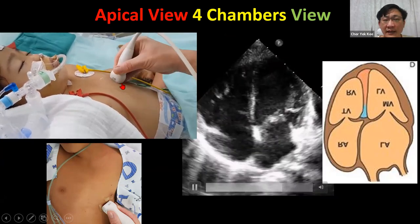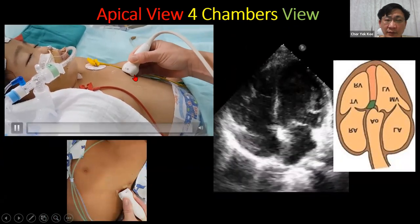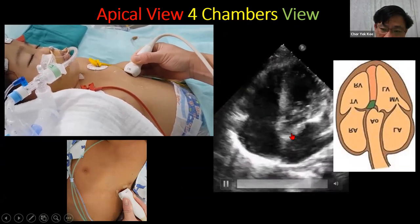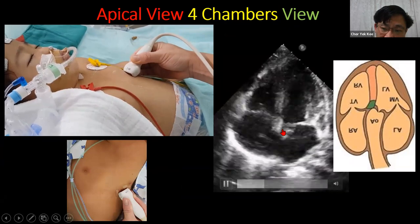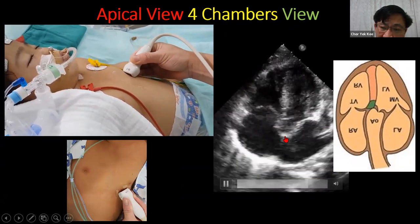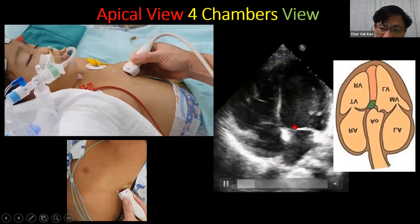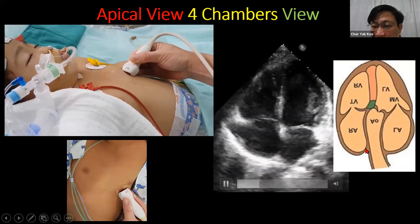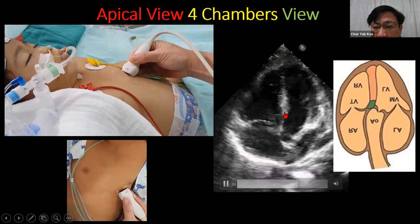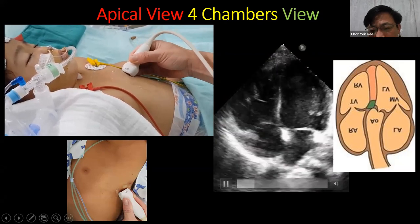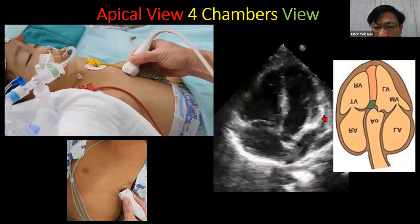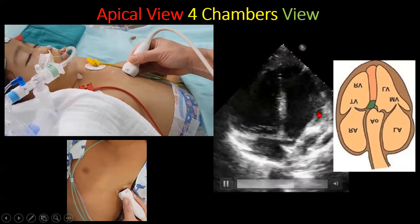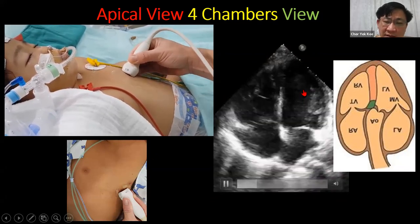From the four-chamber view, tilt the probe slightly upward and another chamber appears — this is the fifth chamber, which is the aortic root and the aorta. This five-chamber view is important for more advanced cardiac monitoring, where you can measure cardiac output from this chamber.